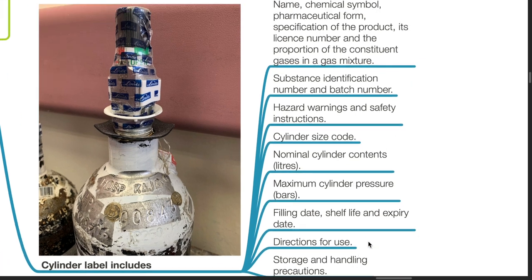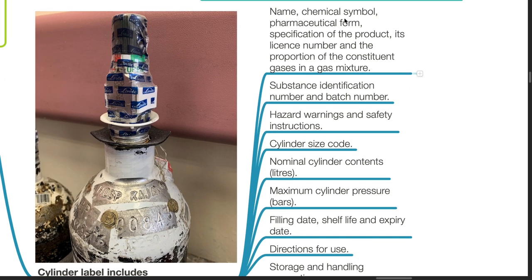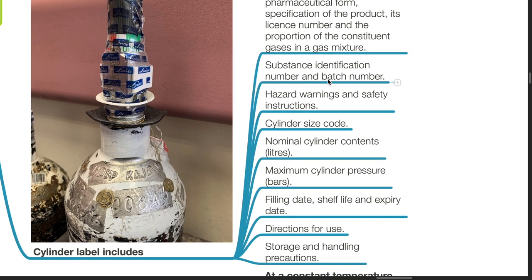Cylinder label includes the name, chemical symbol, pharmaceutical form, specification of the product, its license number, the proportion of the constituent gases in a gas mixture, substance identification number and batch number, hazard warnings and safety instructions, cylinder size code, nominal cylinder contents in litres, maximum cylinder pressure in bars, filling date, shelf life and expiry date, direction for use, storage and handling precautions.